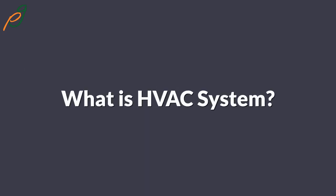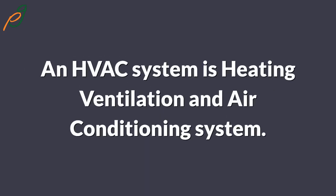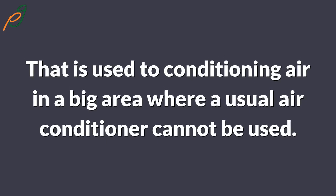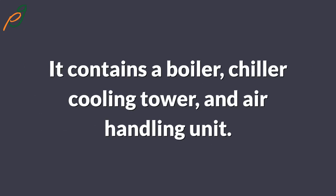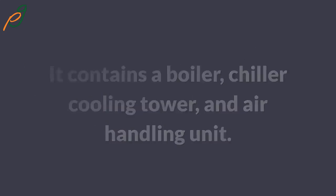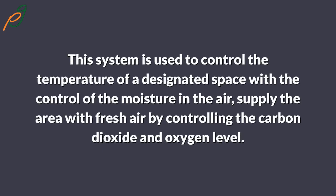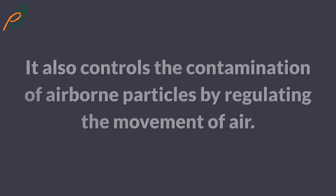An HVAC system is a heating, ventilation, and air conditioning system that is used to condition air in a big area where a usual air conditioner cannot be used. It contains a boiler, chiller, cooling tower, and an air handling unit. This system is used to control the temperature of a designated space, control the moisture in the air, and supply the area with fresh air by controlling the carbon dioxide and oxygen level.